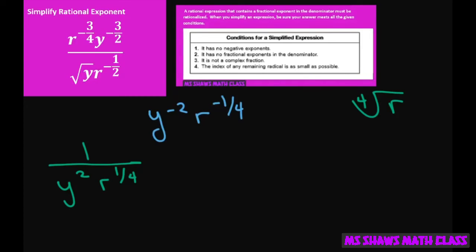You can't have that in the denominator, so what we're going to do is multiply this and rationalize the denominator by r to the three-fourths. And if we multiply the denominator by r to the three-fourths, we also have to multiply the numerator by r to the three-fourths. The y squared is fine because that's not a radical, that's a square.